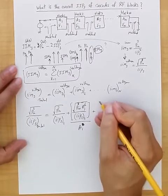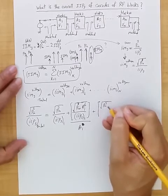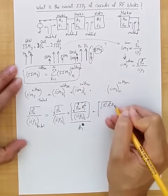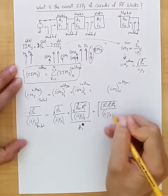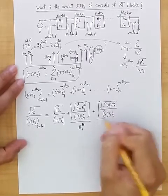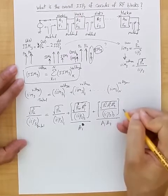And then we have for the next block, we have Pn cubed, A1 to power 6, A2 to power 6, divided by IIP3 of block 3, and divided by A1, A2, and so on.